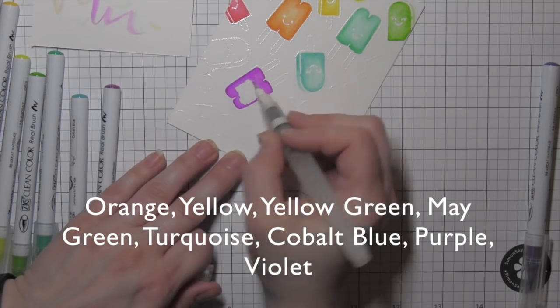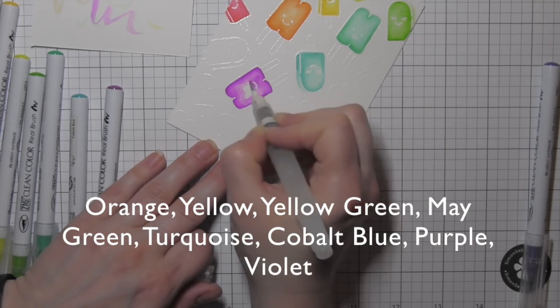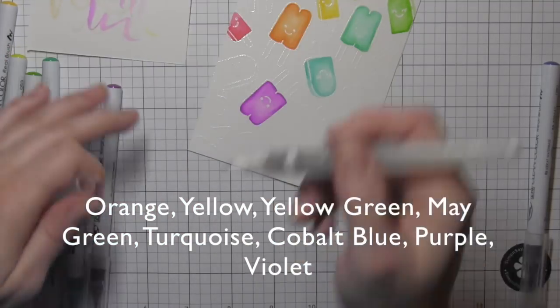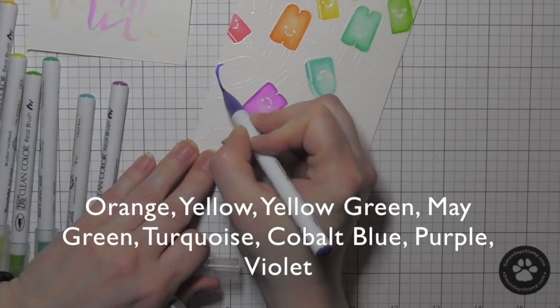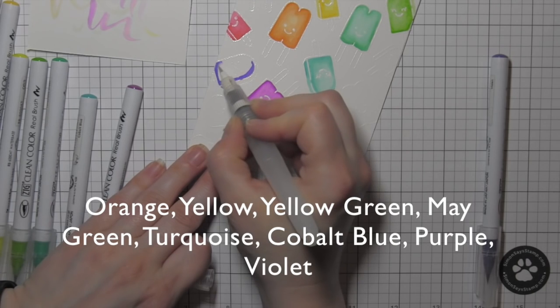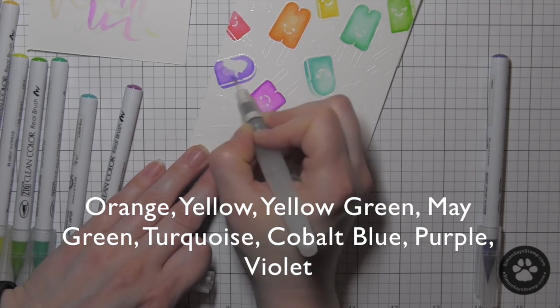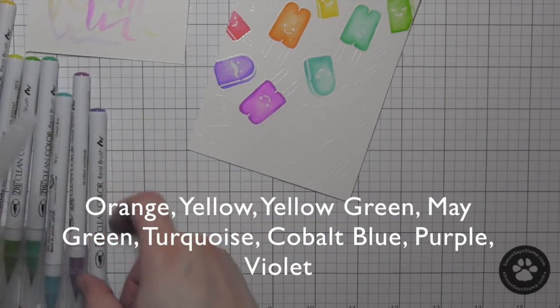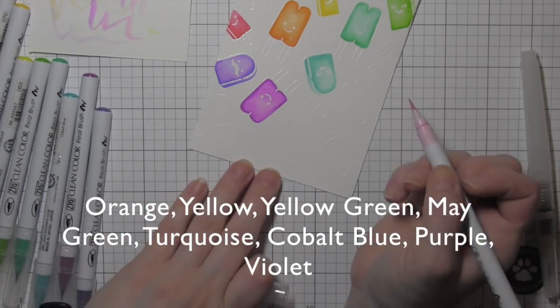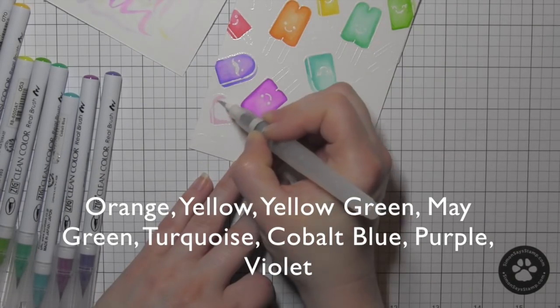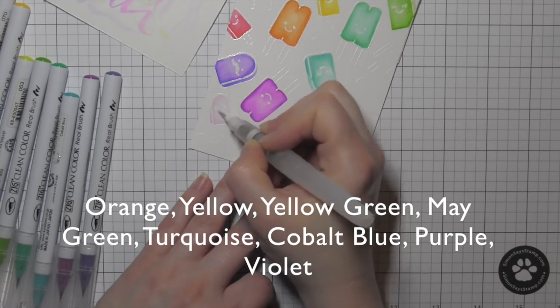This is the purple Zig Clean Color Real Brush marker. You also want to make sure you clean off that water brush on a scrap piece of paper or a scrap rag or something like that, as it is going to pick up some of the color from the marker that you're blending out, and you don't want that to transfer to the next popsicle that you color or the next image you color.